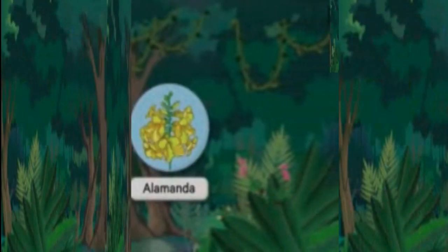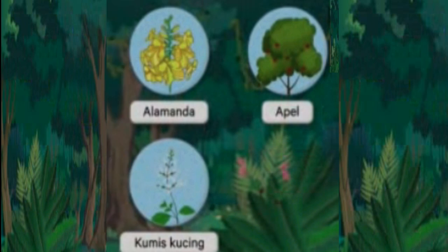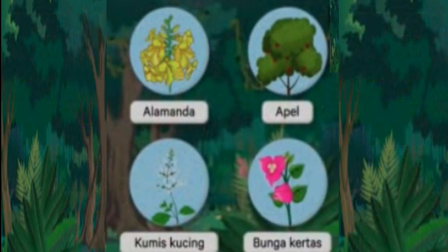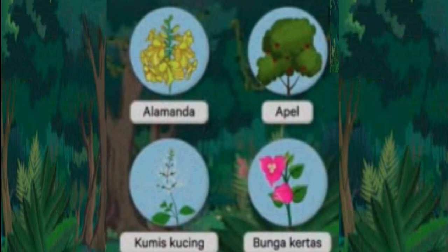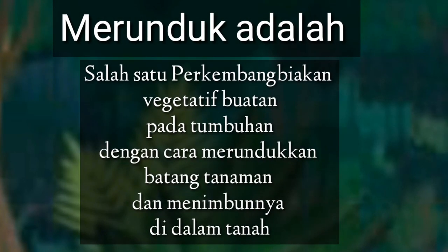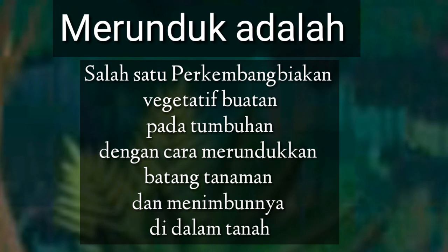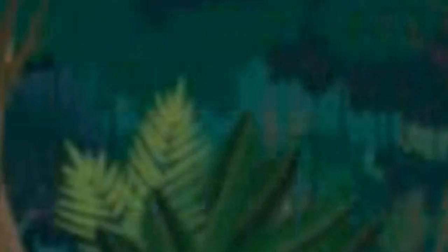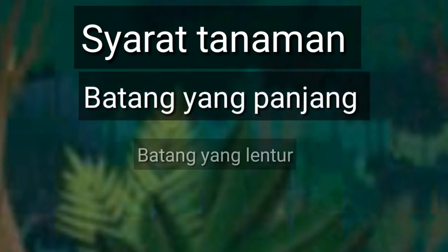Contoh tumbuhan yang diperbanyak dengan cara merunduk adalah tanaman alamanda, apel, kumis kucing, dan juga bunga kertan. Jadi merunduk adalah salah satu cara perkembangbiakan vegetatif buatan pada tumbuhan dengan merundukkan batang tanaman kemudian menimbunnya di dalam tanah. Syarat tanaman yang bisa diperbanyak dengan cara merunduk haruslah memiliki batang yang panjang dan juga lentur.